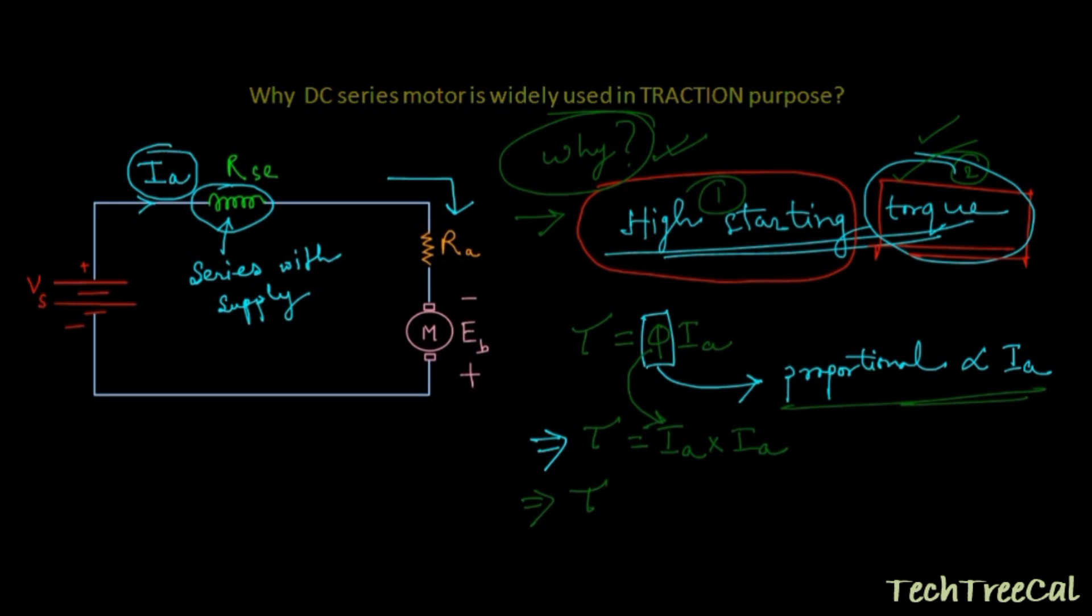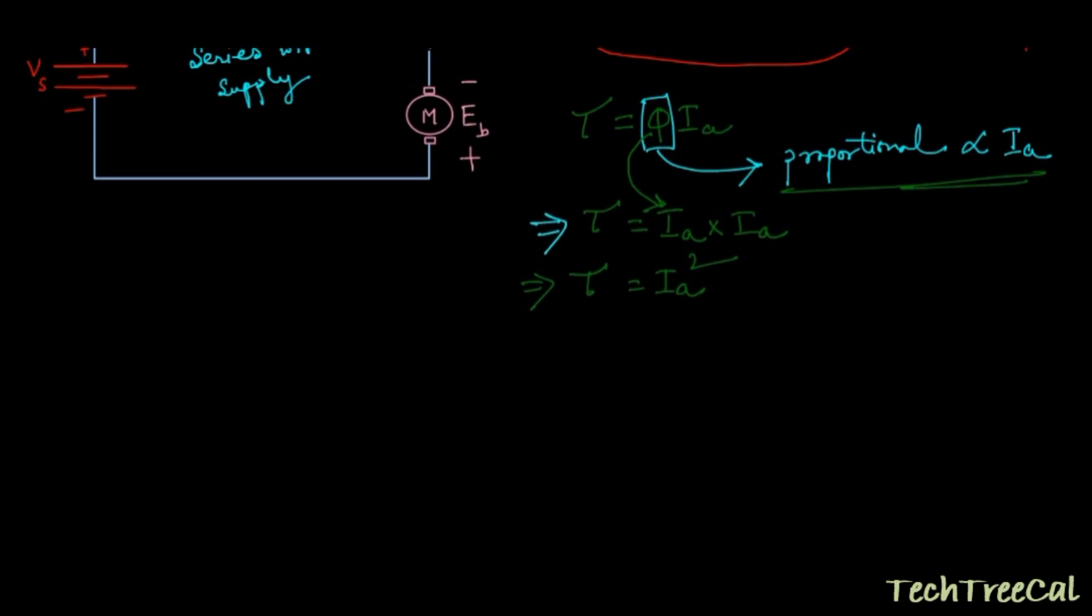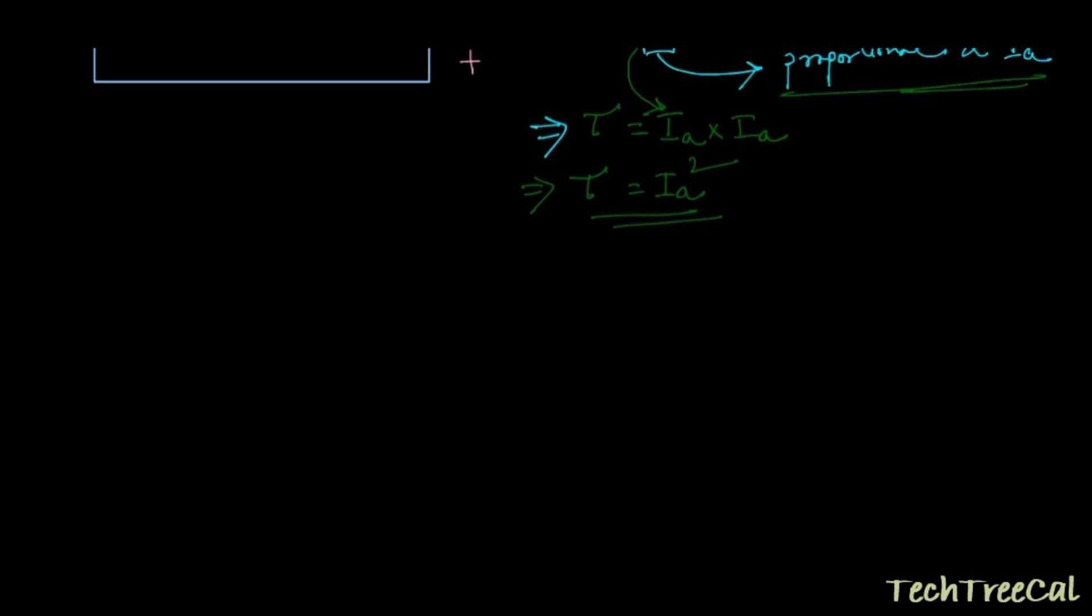See, whenever you are seeing a square term, that means the value of the torque is increasing in a very high range whenever we are increasing a small amount of current.